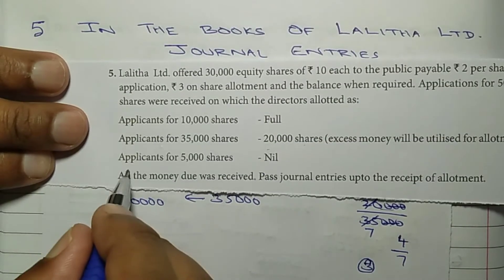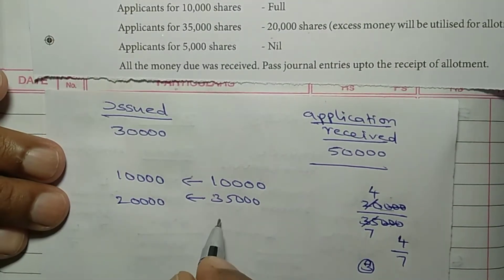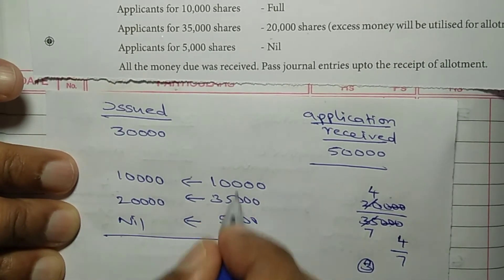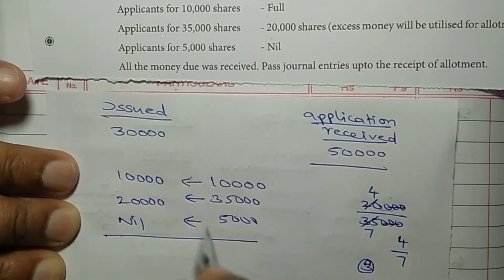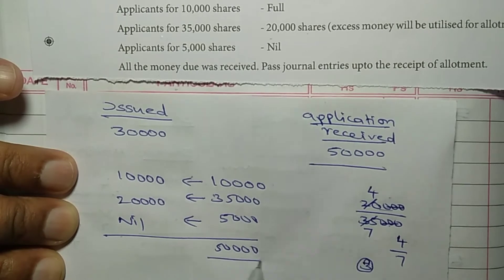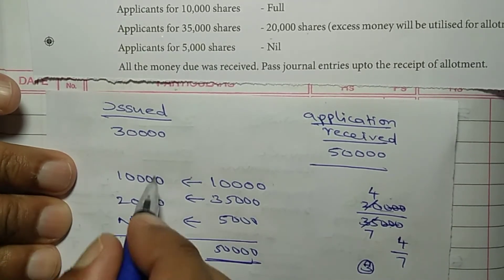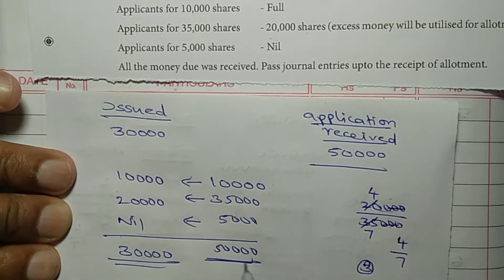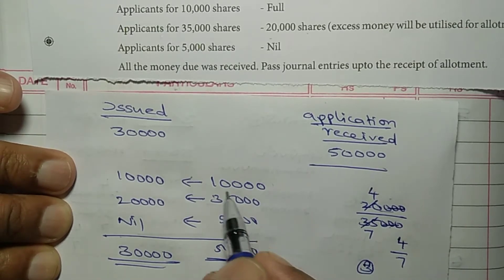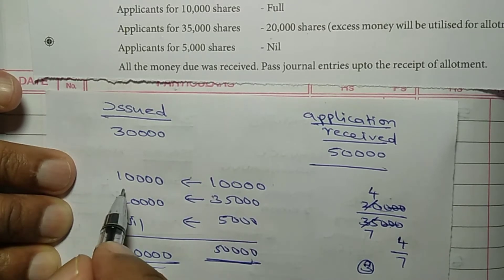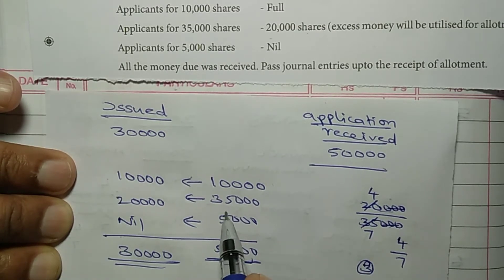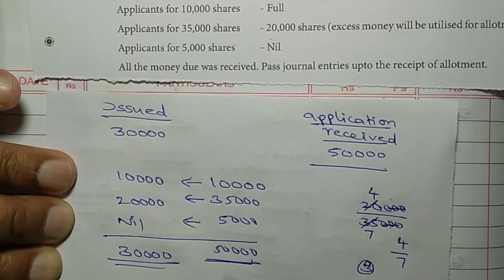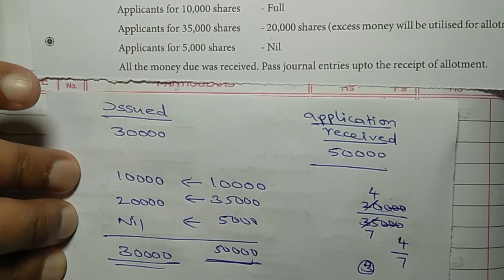Only 20,000 shares are allotted. Application for 5,000 shares is nil — 5,000 shares are rejected. Applications received total 50,000: 10,000 shares fully accepted, 35,000 shares on pro-rata (only 20,000 allotted), and 5,000 shares rejected with money refunded. Total issued is 30,000. That is pro-rata allotment.